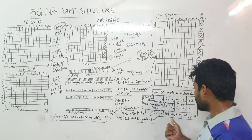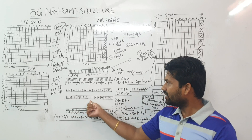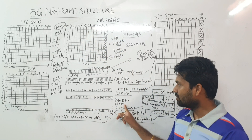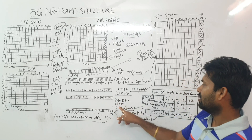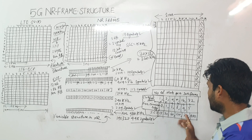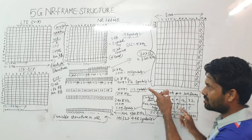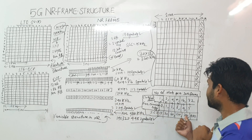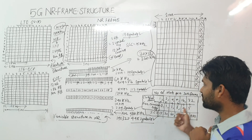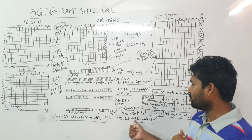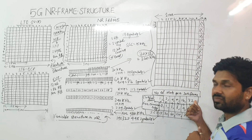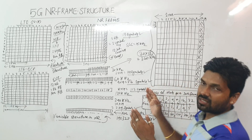For 240 kHz subcarrier spacing you get 16 slots within the same one millisecond, and each slot has 14 symbols, giving 16 × 14 = 224 symbols. This is in the millimeter wave range, where mu = 4, meaning 2⁴ × 15 = 240 kHz.